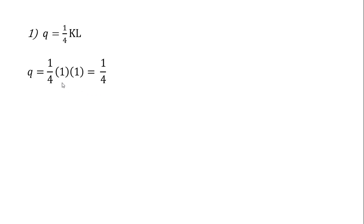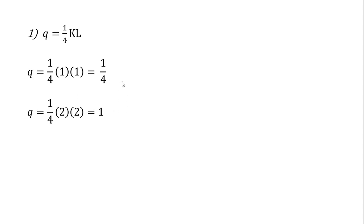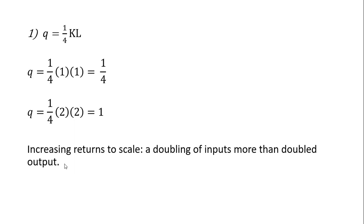Now I'm going to double the input mix. We started with K=1, L=1, so let's try K=2, L=2. When K is 2 and L is 2, our output is now 1. Notice that output went up more than two times — we doubled our inputs and output more than doubled. In that case, we're dealing with increasing returns to scale. Let's do some more examples.